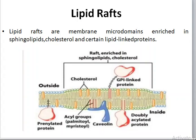Lipid rafts are membrane microdomains enriched in sphingolipids, cholesterol, and certain lipid-linked proteins. They are different from other portions of the biological membrane by not being mobile and easily flexible. These are rigid regions containing specific compositions of lipids such as sphingolipids and cholesterol. They are inflexible and remain rigid unless they bind to their ligands coming from the external environment or external compartment.